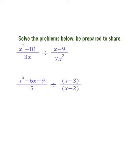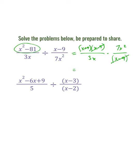A couple more to practice. I'm going to recognize the perfect square binomial and rewrite it as x plus 9 times x minus 9, all over 3x, then flip that second fraction — the divisor. I see an x minus 9 that simplifies out. In the numerator I have 7x squared and x plus 9, all over 3x. One final step: I have x squared in the numerator and x in the denominator, so I simplify to get 7x times x plus 9, all over 3.